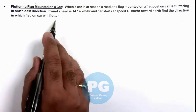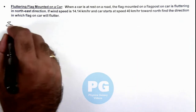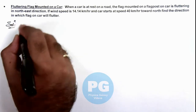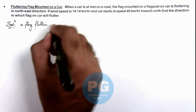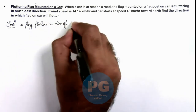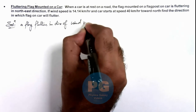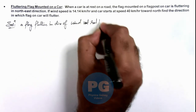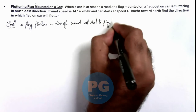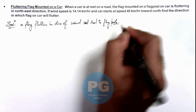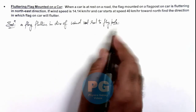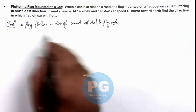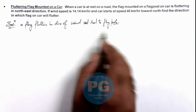We are required to find the direction in which the flag on the car will flutter. In the solution, we can write that a flag always flutters in the direction of wind velocity relative to the flag pole. If the flag pole is at rest, the flag will flutter in the direction of wind. If it is moving — mounted on a vehicle — it will flutter in the direction of wind with respect to the vehicle.